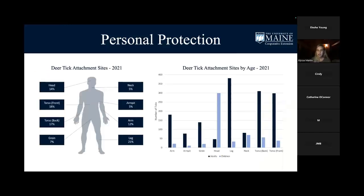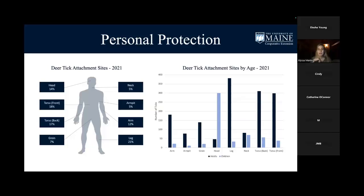In terms of where ticks are typically found on a person, it really depends on adults versus children. With adults, the highest frequency is on the leg. With children, it's on their head — likely because children are shorter, so the tick goes to the highest point it can reach. Ticks also like little crevices such as behind the knee, under the armpits, and around the torso. It really depends on where those ticks can find a good spot.